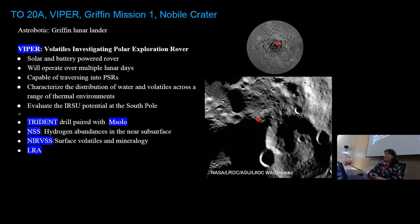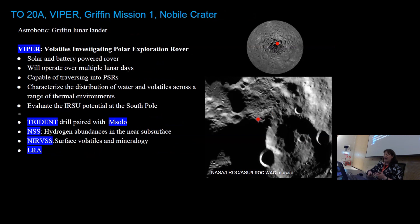Viper, or Griffin Mission 1, is a solar battery-powered rover that will operate over multiple lunar days and travel in and out of PSRs. The overarching goal of Viper is to characterize the distribution of water and volatiles across a range of thermal environments and evaluate the ISRU potential at the south pole. It has a Trident drill paired with M-SOLO, as well as NSS and NIRVSS — instruments also flying on the T02AB Peregrine Mission 1.